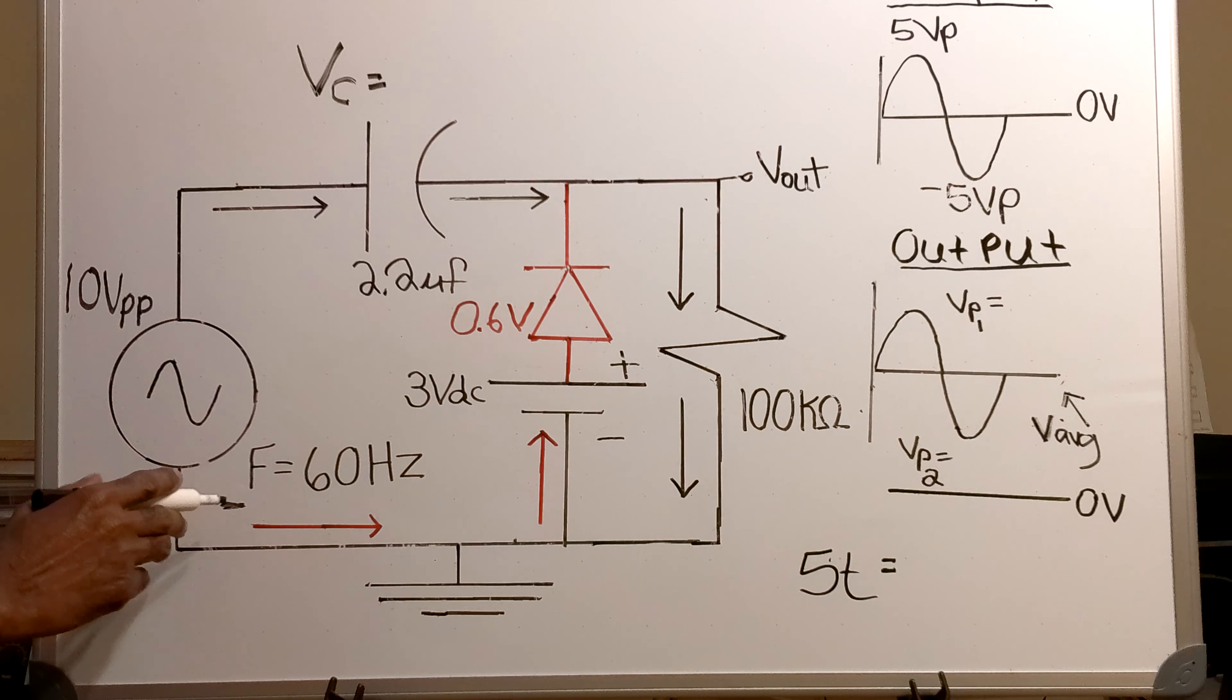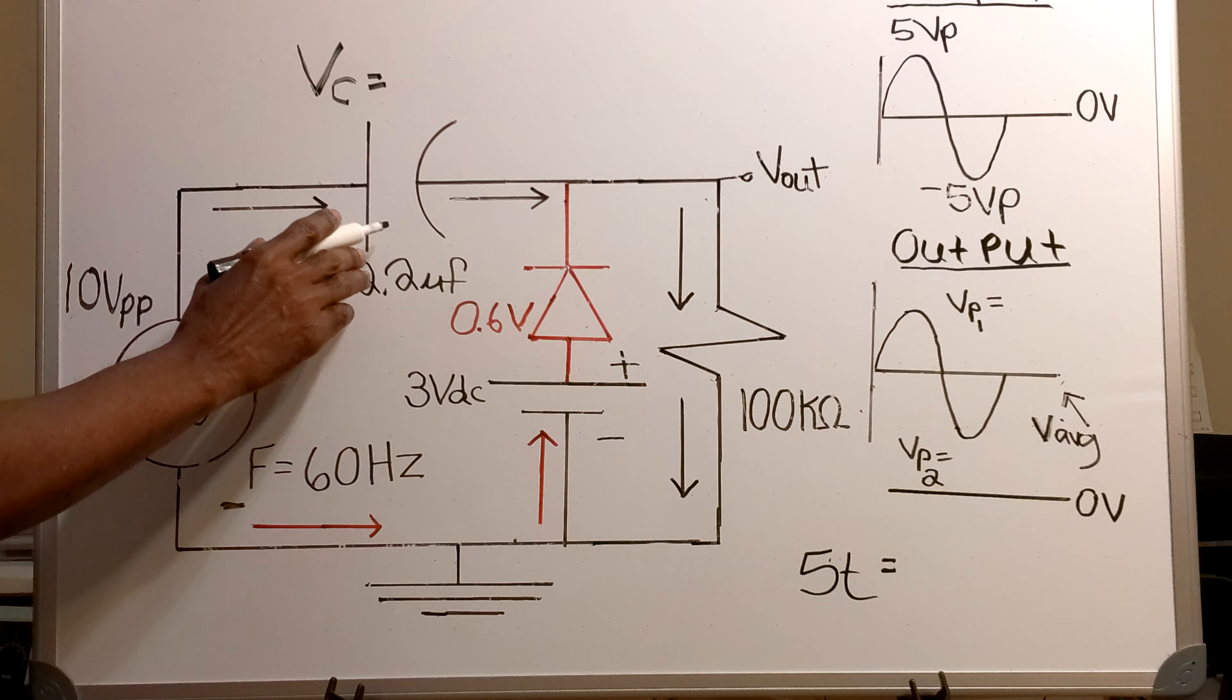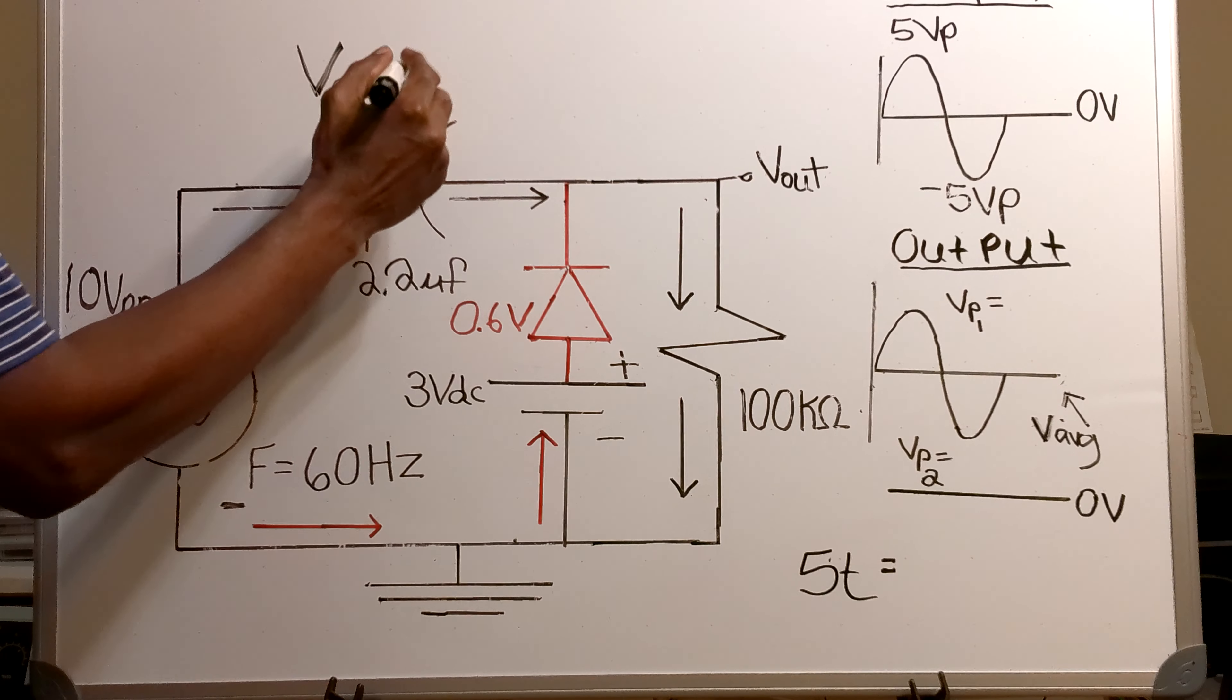And the capacitor is being charged up through the diode. Now the charge on the capacitor exists, the voltage on the capacitor equals...